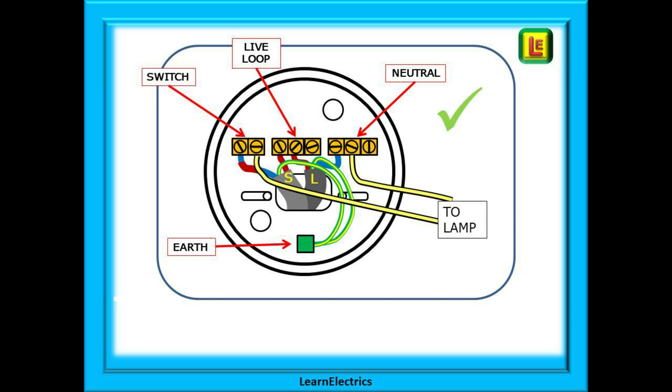Starting with the earth at the bottom and working clockwise we have the switch block, the only two hole terminal block in the fitting. In the middle is a three hole live loop block. This block is permanently live and then the three hole neutral block on the right. Notice the two cables entering the rows in the center. The live cable from the consumer unit or previous room marked here as L and the switch cable that goes to and returns from the room switches marked S and lastly the two wires that go to the lamp or bulb.